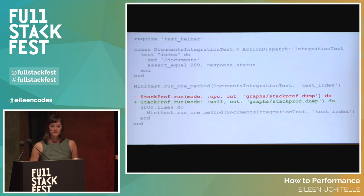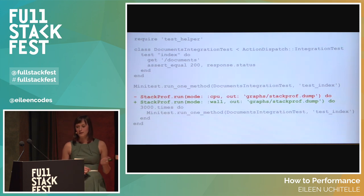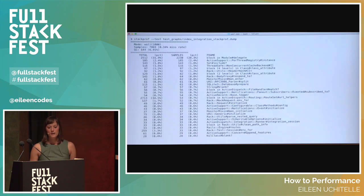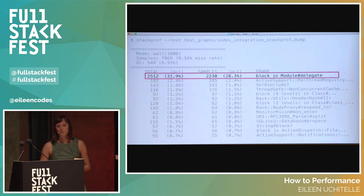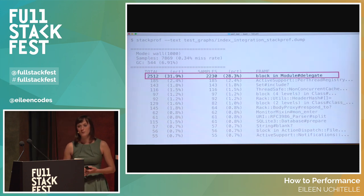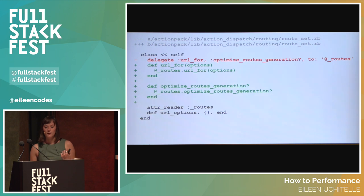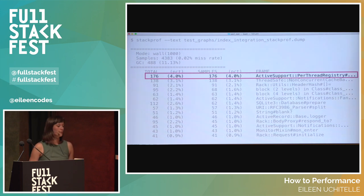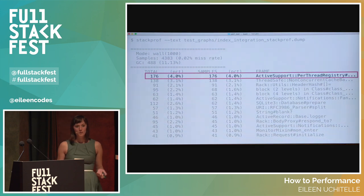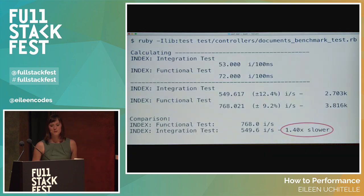We can simply resolve this by using wall time instead. If we change the mode in our StackProf script from CPU to wall time, we get accurate results that tell us where the real problems are. And that problem was not in Minitest — it's not even represented in the stack sample. StackProf with wall time actually pointed to a regression in the delegate method where we're spending 28.3% of our time. Aaron changed the delegated methods in Routeset to be written out. If we change that and run the StackProf script again, we can see that module delegate is no longer in the list, and the slowest sample we have now is only 4% of time spent in per-thread registry.